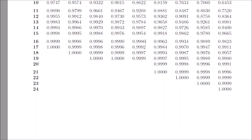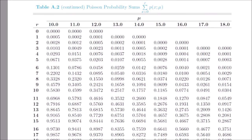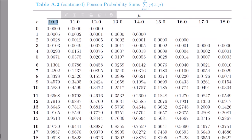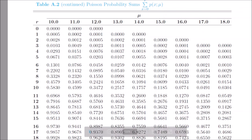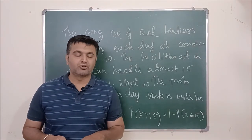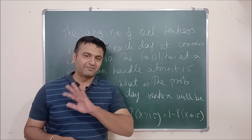So the answer is 1 minus 0.9513. That's how you use the Poisson distribution table to solve these problems. I hope the concept of Poisson distribution is clear to you. If yes, then do not forget to like, share, and subscribe. Thank you.